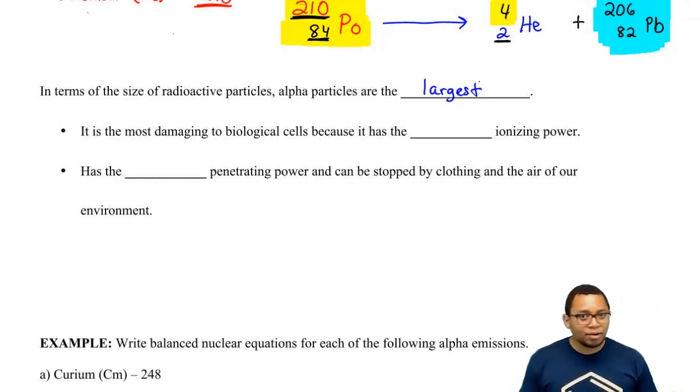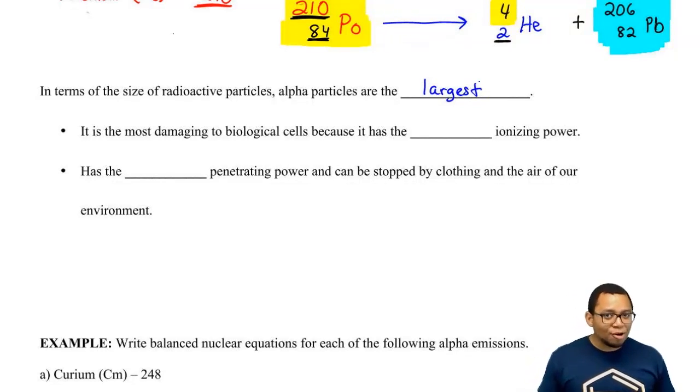It's bigger than the beta particle and bigger than the gamma particle. The alpha particle is the largest of them.